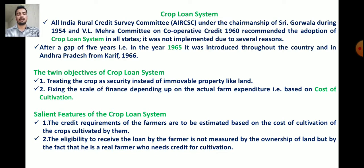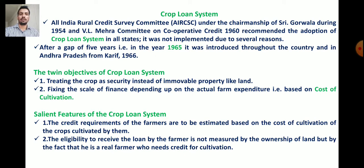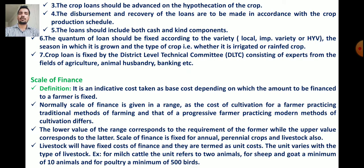Now the salient features of the crop loan system. First, the credit requirement of the farmers is to be estimated based on the cost of cultivation of the crops. Second, the eligibility to receive the loan by the farmer is not measured by ownership of land, but by the fact that he is a real farmer who needs the credit for cultivation. Third, the crop loan should be advanced on the hypothecation of the crop, meaning the crop serves as security.